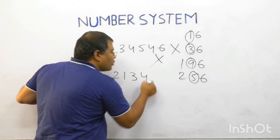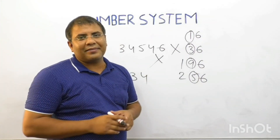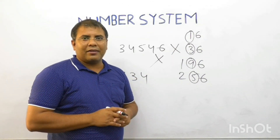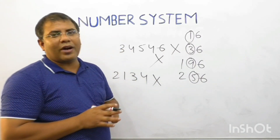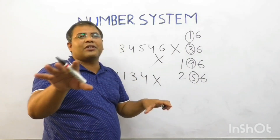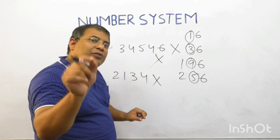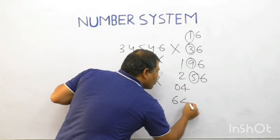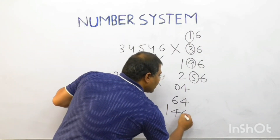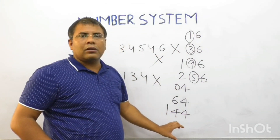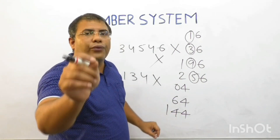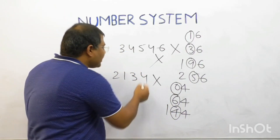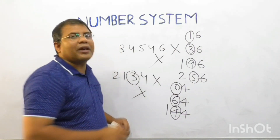Similarly, is 2134 going to be a perfect square? My answer is it's never going to be a perfect square. Once again, observation: numbers which are perfect squares and end with 4 include 4, 64, and 144. In all of these, the second-to-last digit is always even. In 2134, that digit is 3 — an odd number — so it's not a perfect square.